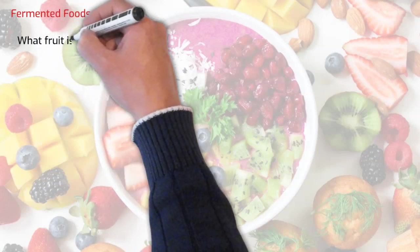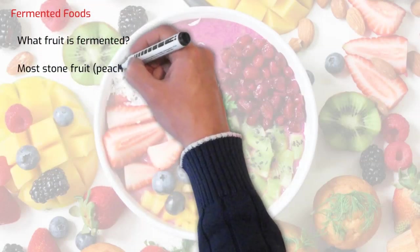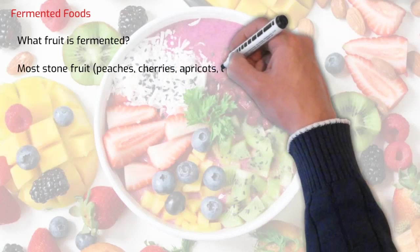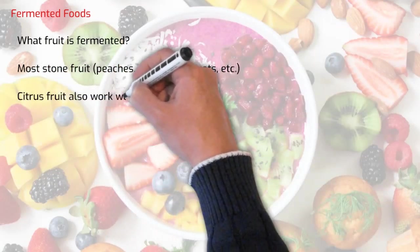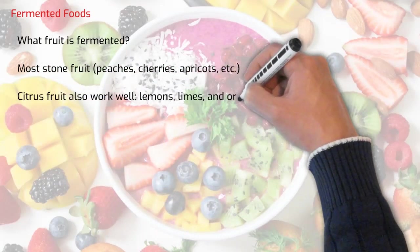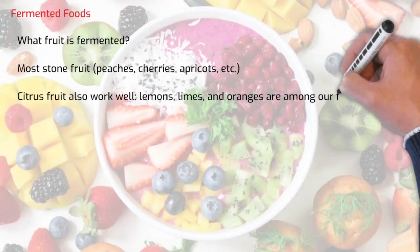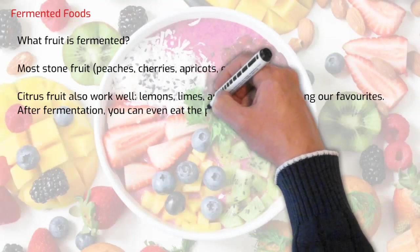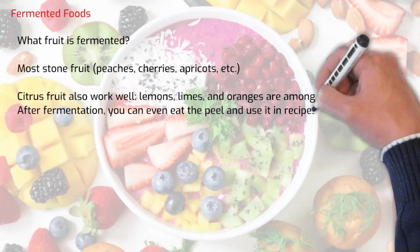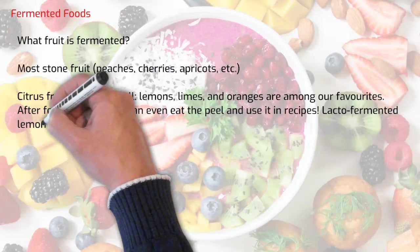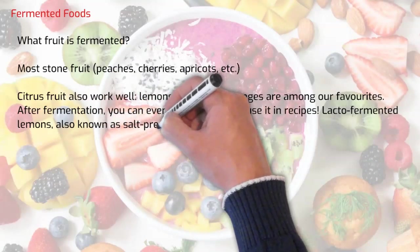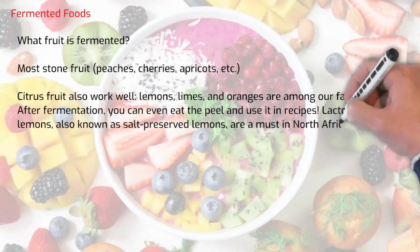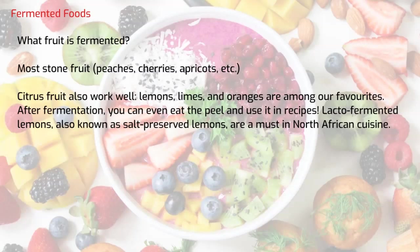What fruit is fermented? Most stone fruit such as peaches, cherries, apricots, etc. Citrus fruit also work well. Lemons, limes and oranges are among our favorites. After fermentation, you can even eat the peel and use it in recipes. Lacto-fermented lemons, also known as salt-preserved lemons, are a must in North African cuisine.